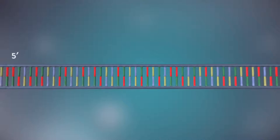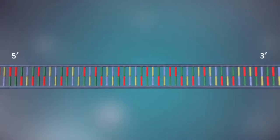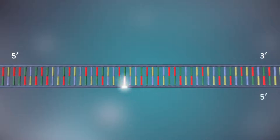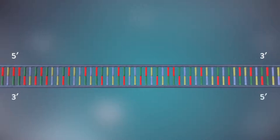Each strand has a 5' end and a 3' end. The two strands run in opposite directions. This determines how each strand of DNA is replicated.